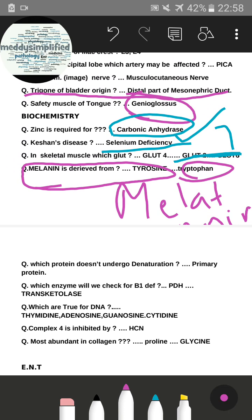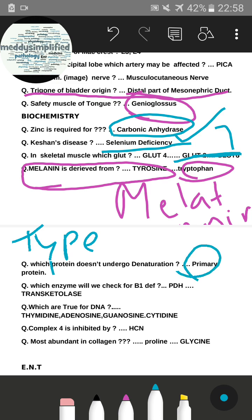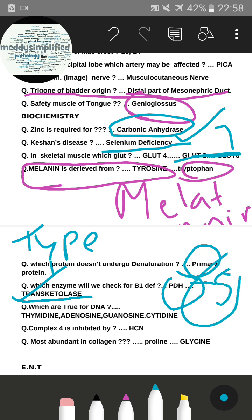The next question asked which type of protein does not undergo denaturation. Options were primary, secondary, tertiary, and quaternary — the correct answer is primary, as it cannot be further denatured. For the B1 deficiency enzyme question, options included pyruvate dehydrogenase (PDH) and transketolase. The correct answer is transketolase because TPP is the only coenzyme for transketolase, making it the best marker for B1 deficiency.